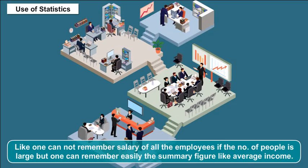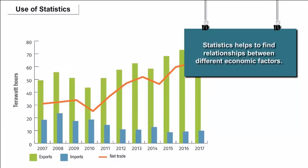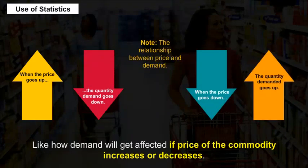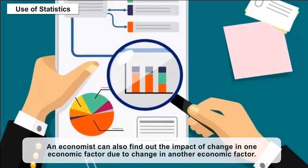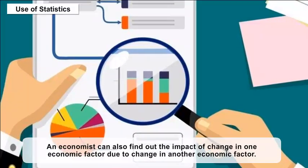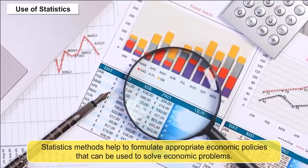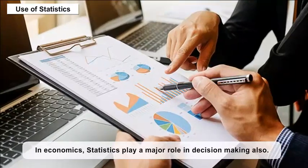Statistics helps to find relationships between different economic factors, like how demand will be affected if the price of a commodity increases or decreases. Such relationships can be verified by applying statistical methods to data. An economist can also find out the impact of a change in one economic factor due to a change in another. Statistical methods help formulate appropriate economic policies to solve economic problems, and statistics also plays a major role in decision-making in economics.